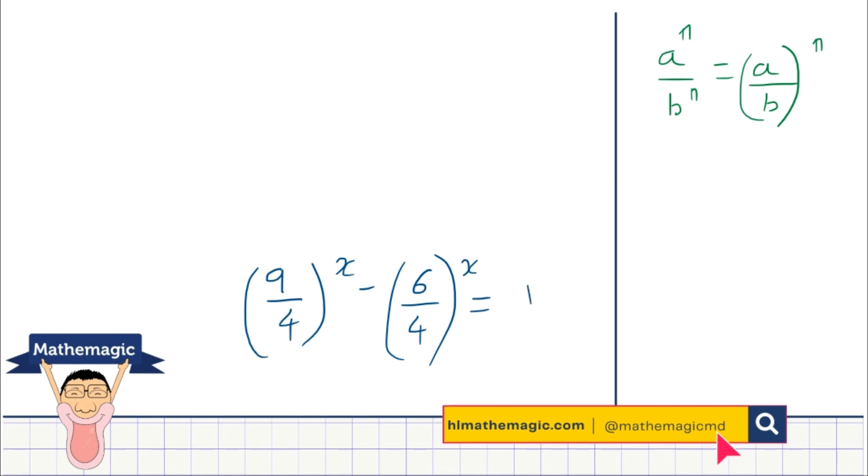Starting from the top here, we notice that 9 over 4 can be written as 3 over 2 squared. And this will still be to the power x minus 6 over 4, which can also be written as 3 over 2. If you divide the top and bottom by 2, you'll get 3 over 2. And this is also to the power x equal 1.